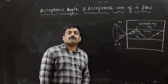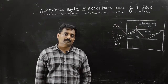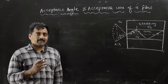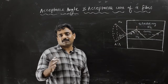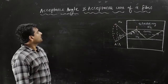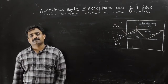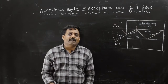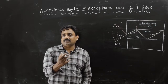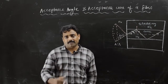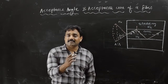Today we are discussing the theory of optical fibers. The main theory of optical fiber is total internal reflection. What do you mean by acceptance angle and acceptance cone of an optical fiber? Optical fiber accepts light at a particular angle, known as the acceptance angle.